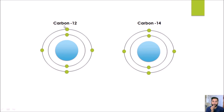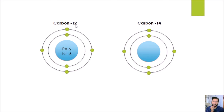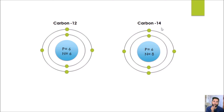Let's look at the isotopes of carbon. We have two isotopes of carbon: carbon-12 and carbon-14. We have 6 protons and 6 neutrons in carbon-12, so when you add 6 and 6 you get 12 — that mass gives it its name. In carbon-14, the protons remain the same at 6, but we have 8 neutrons, so there is an addition of 2 neutrons, and 6 plus 8 gives the mass number 14.